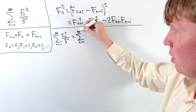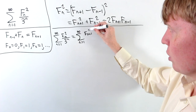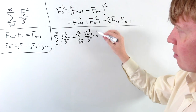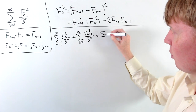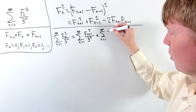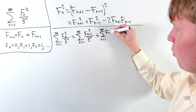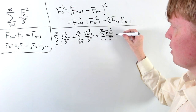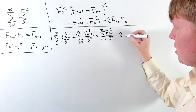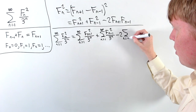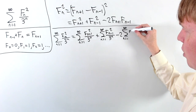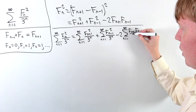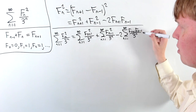This allows us to split the sum into the following three sums. First, the sum of fn+1 all squared divided by 3 to the n. Then the same sum from 1 to infinity, but now fn-1 all squared divided by 3 to the n. And for the last term, take away two lots of the sum from n equals 1 to infinity of fn+1 times fn-1, divided by 3 to the power of n.